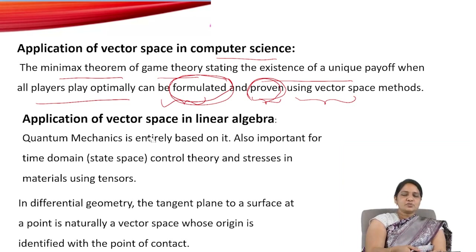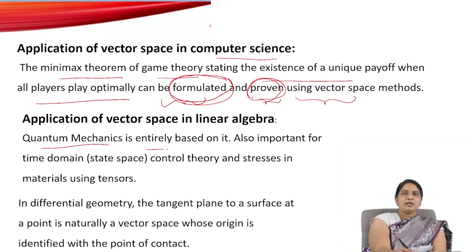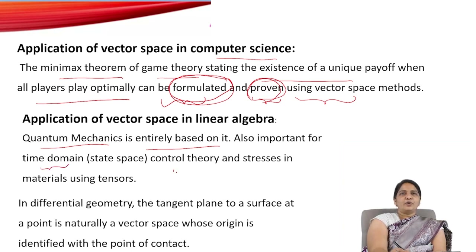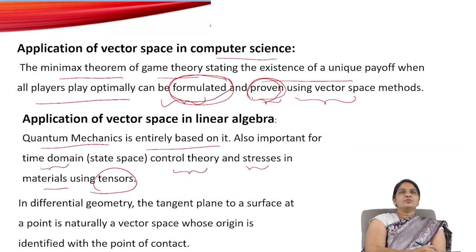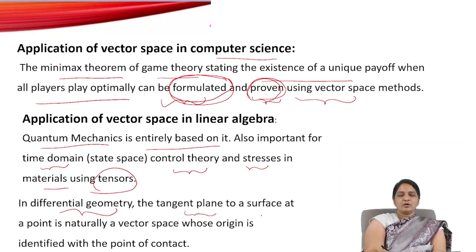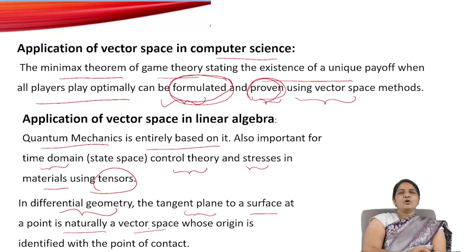In linear algebra and differential geometry, quantum mechanics is entirely based on vector spaces. Vector spaces are also important for time-domain control theory and stresses in materials using tensors. The tangent plane to a surface at a point is naturally a vector space whose origin is identified with that point.